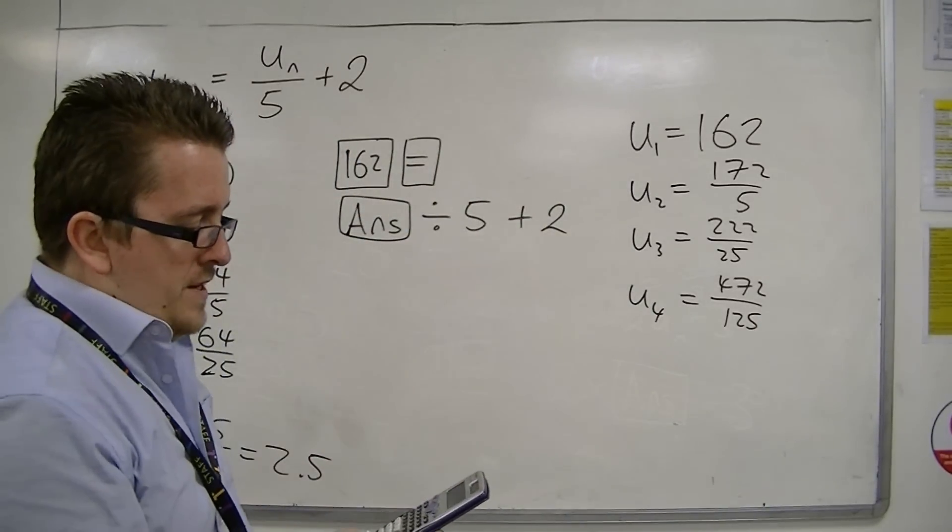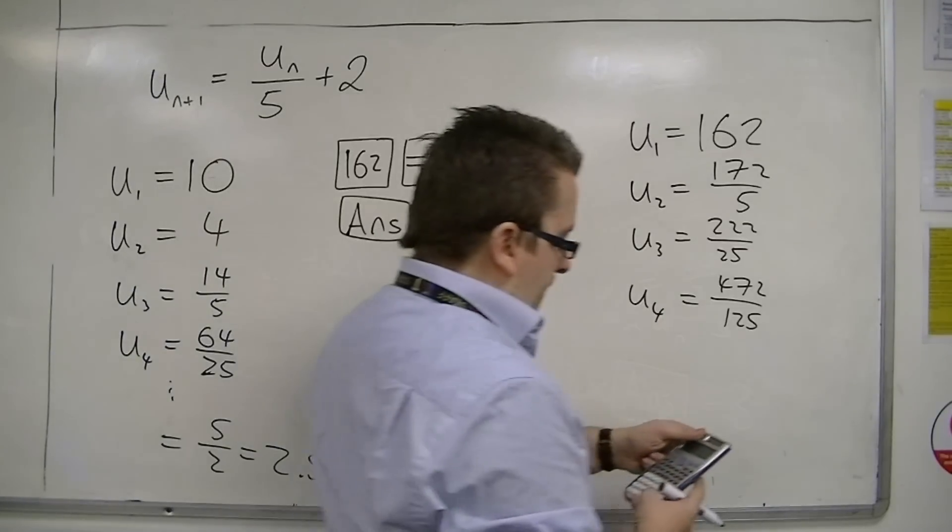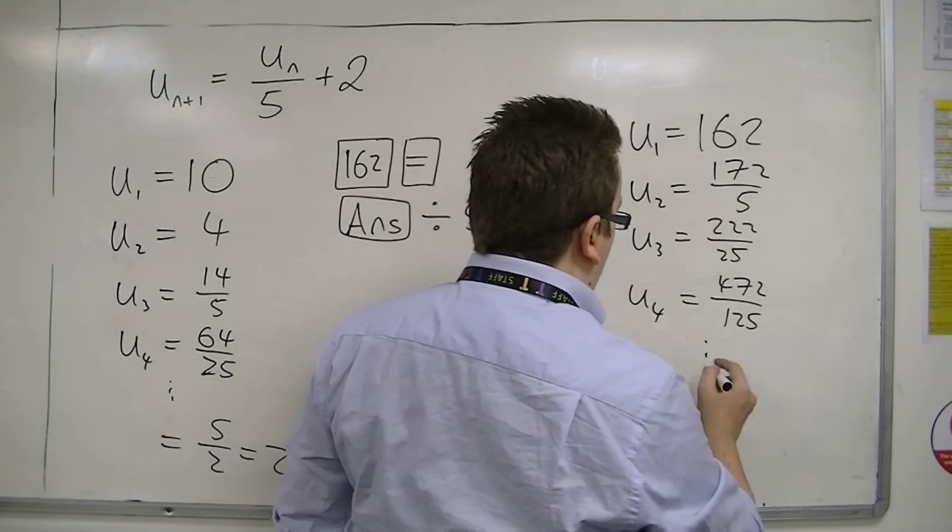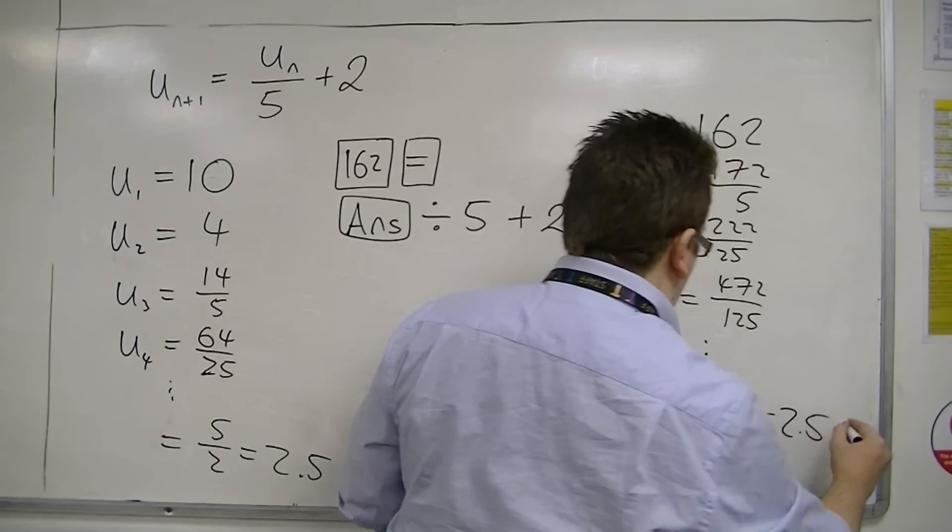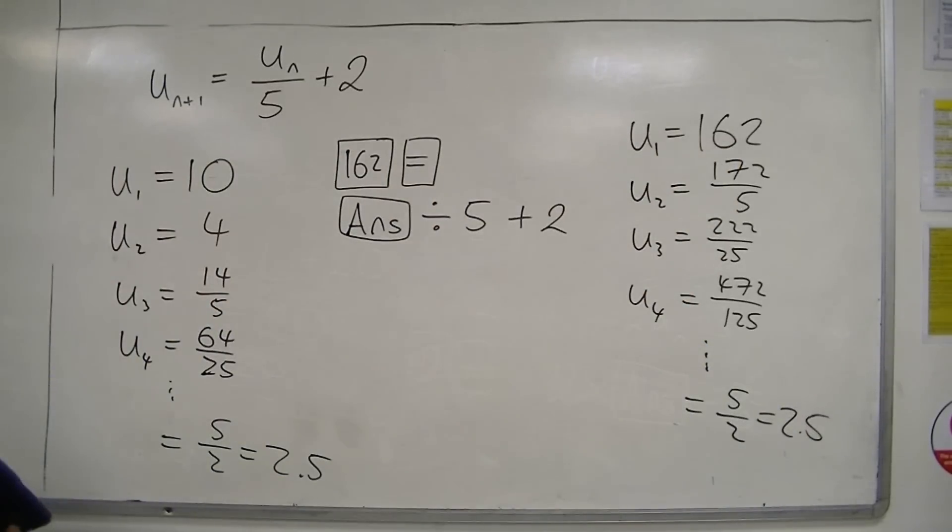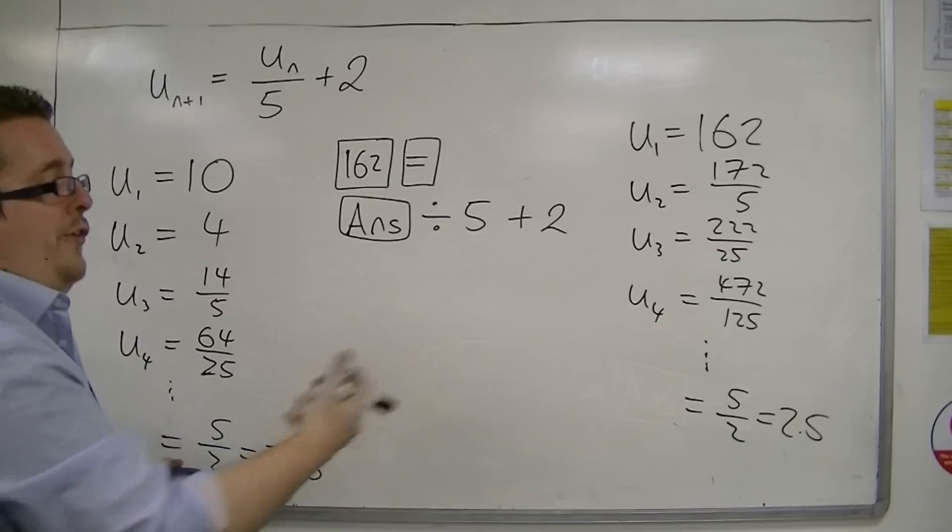You should find that if I keep pressing equals for long enough, I get down to 5 halves again, 2.5. This is strange—starting at different values but actually limiting towards the same value.